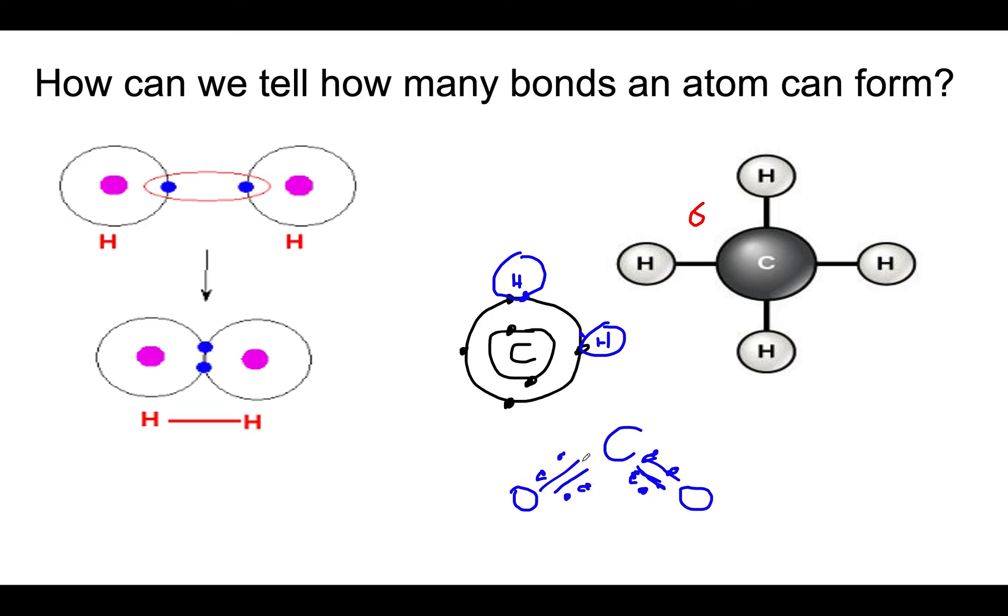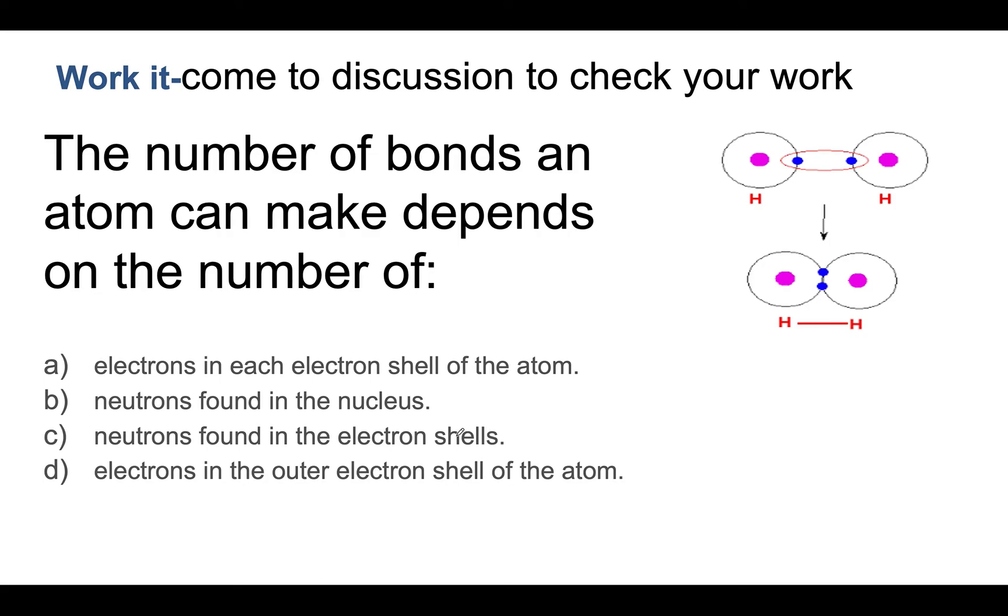Therefore you form a double bond and in this case all three of these atoms have a complete outer electronic shell. So the total number of bonds an atom can make depends on how many more electrons it needs to complete its outer electron shell. Now work through this problem and come to the discussion to check your answer.